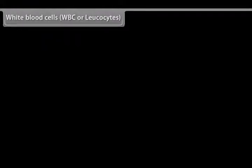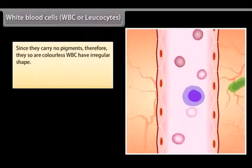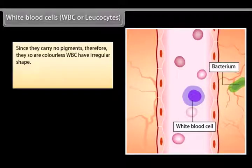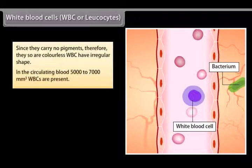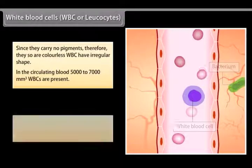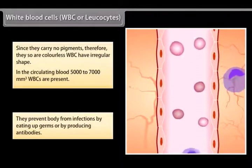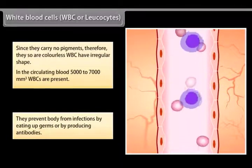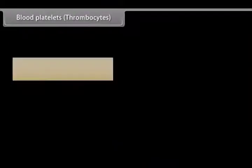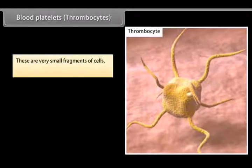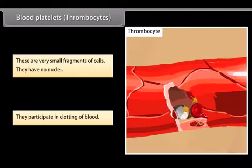White blood cells, WBC or leukocytes. Since they carry no pigments, therefore they are colorless. WBC have irregular shape. In the circulating blood, 5,000 to 7,000 per mm cube WBCs are present. They prevent body from infections by eating up germs or by producing antibodies. Blood platelets, thrombocytes, are very small fragments of cells. They have no nuclei. They participate in clotting of blood.